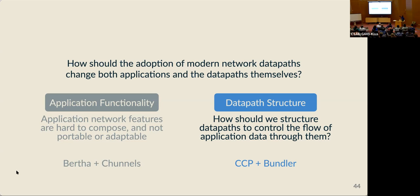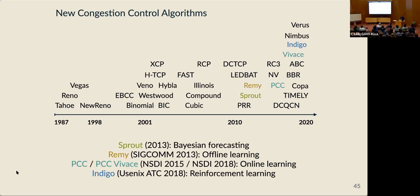Now I'm going to return to our question about data path structure and explore this in the context of congestion control, because congestion control is an especially dynamic component of modern data paths. What I mean by dynamic is that we've seen a lot of growth in the number of proposed congestion control algorithms over the past few decades — not just the number but also the complexity, with recent approaches using more expensive computation and even machine learning in some cases. Even algorithms without complicated calculations like BBR can take weeks or months of effort to get right on an individual data path.